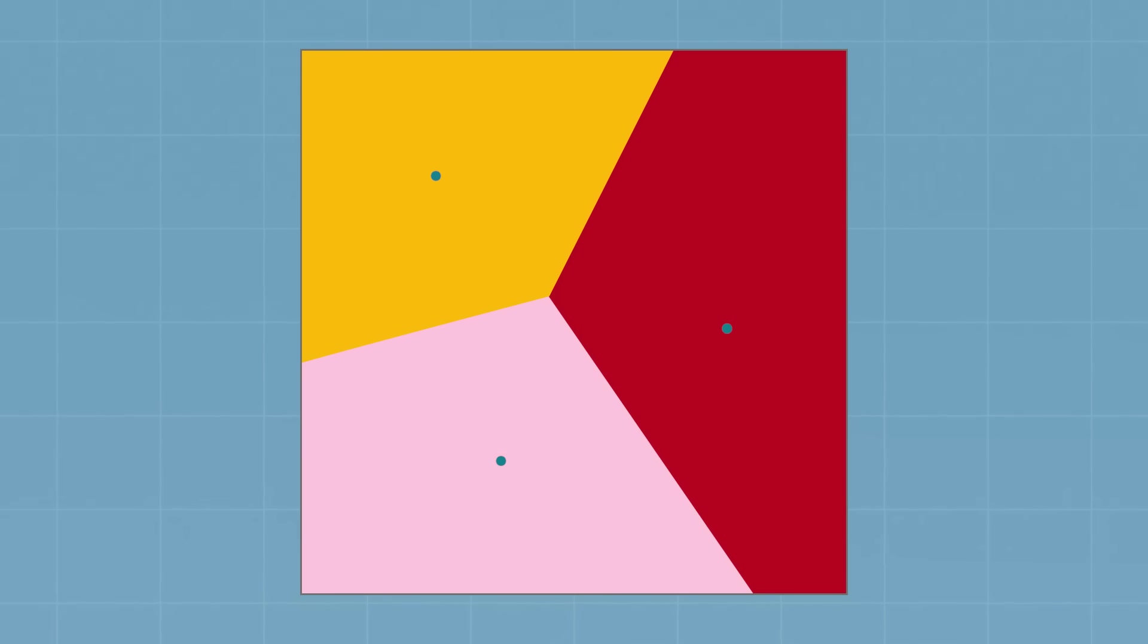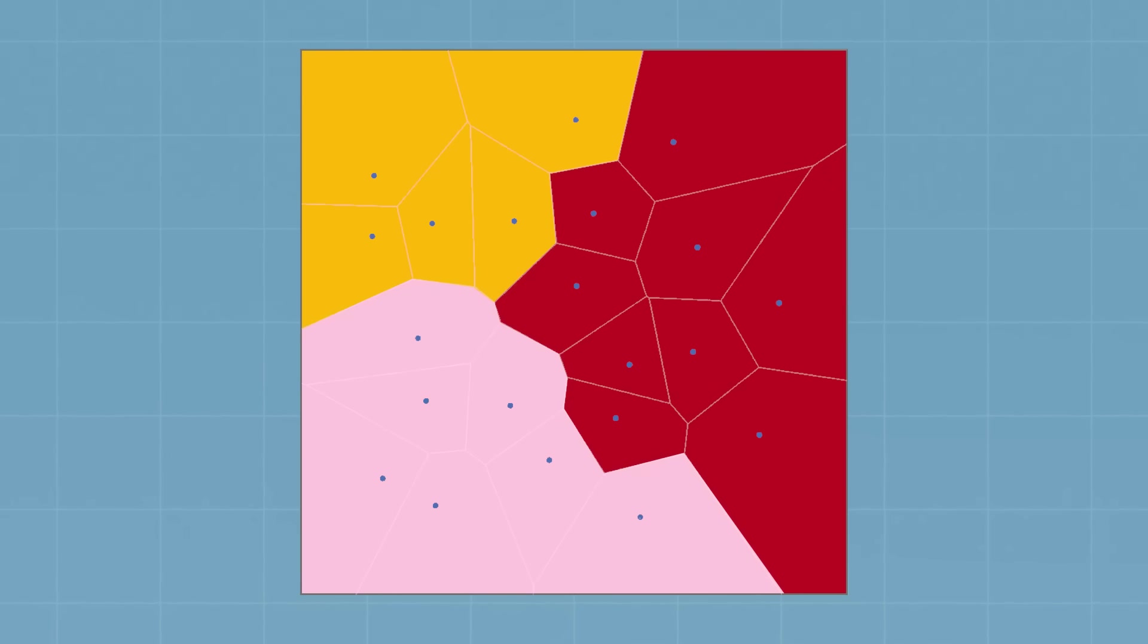We are generating our plates by picking some random points and then coloring the map based on what point is closest. This is called a Voronoi diagram. Then we split each region into a bunch of subpoints which all contribute to the same color but add some variety to the shape.